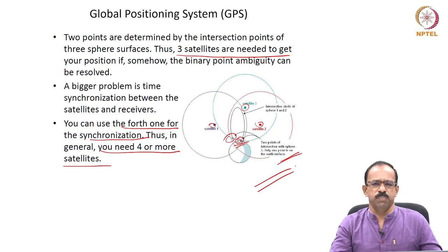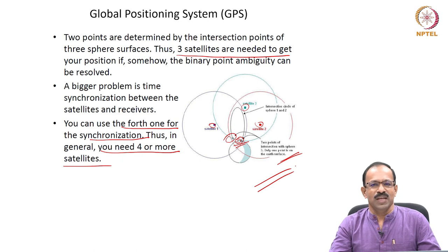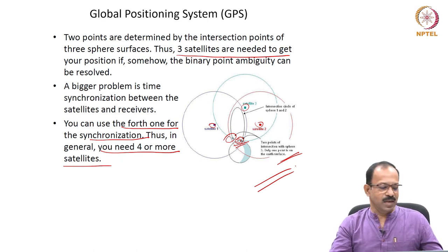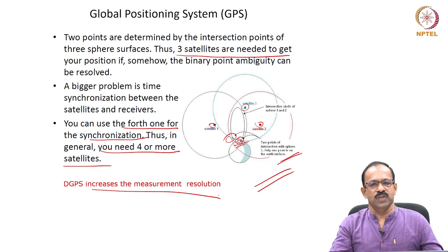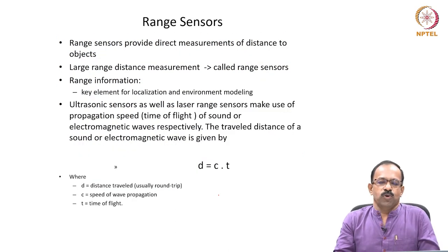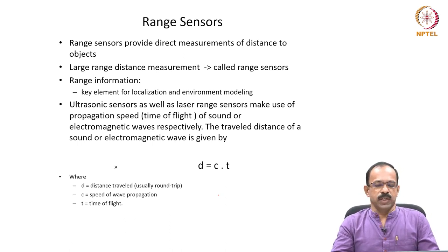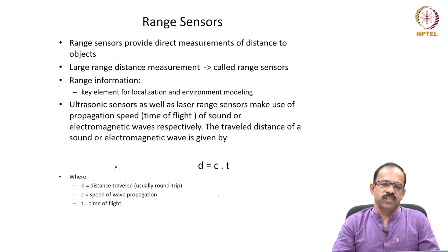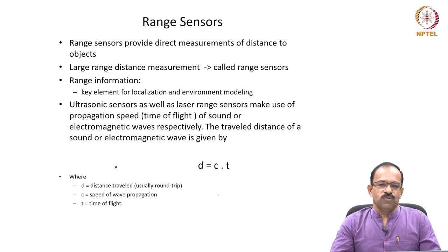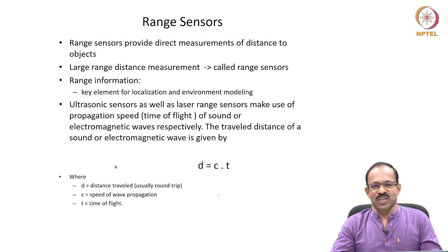There are also advanced systems called DGPS — differential GPS — which achieves millimeter-level accuracy for more precise positioning. It increases the resolution of the GPS. That is about beacon-based localization — once you have an active beacon, the receiver can resolve its position based on the signals it receives. We will stop here and continue the discussion on sensors in the next class. Thank you.